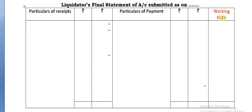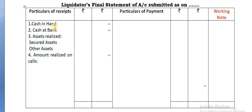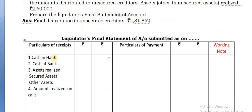You have to have a pencil with you - please write only in pencil. On the debit side, take all the asset items: cash in hand, cash at bank, assets realized, secured assets, other assets, and amount realized on cards.